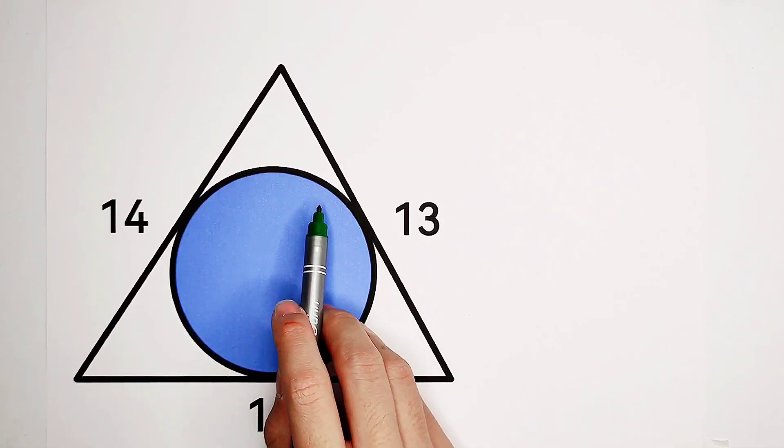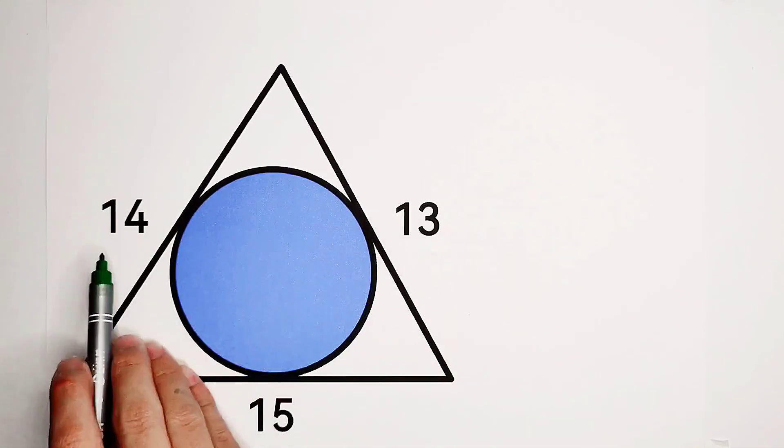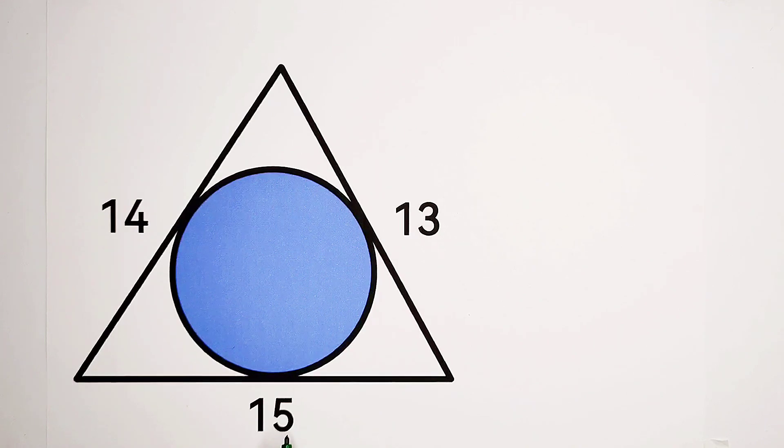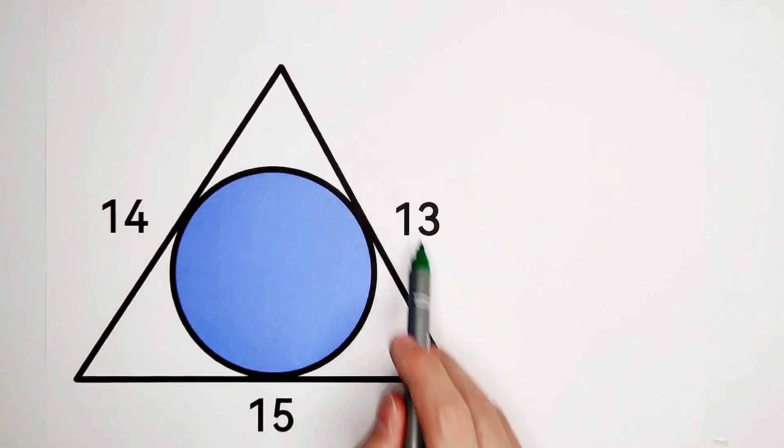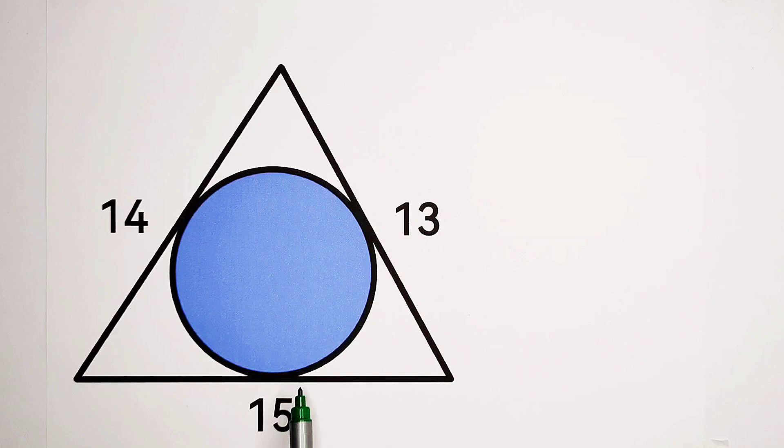Here is a triangle whose side measures 13, 14, and 15, with an inscribed circle. What is the area of the circle?